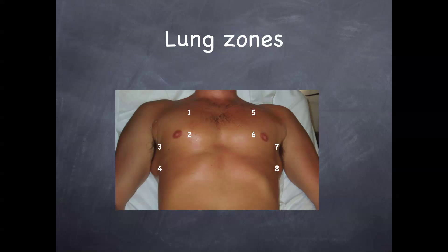Here are the zones of the lung — this is important, especially when you're viewing images. It's not so important acutely because you're doing the ultrasound and you know where you're looking, but when people want to find where the corresponding pneumonia or effusion is, it's important to know where you are in the chest. This map gives us an idea of that. There are eight zones, starting on the right and moving to the left — pretty self-explanatory, just something to commit to memory.